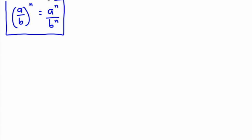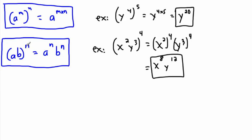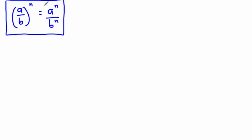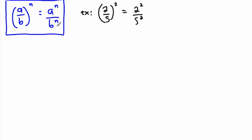So you're allowed to split them like this. When we were multiplying things we could write them out, we can do the same sort of thing with dividing as well. For example, 2 fifths to the power of 2 is the same thing as 2 to the power of 2 over 5 to the power of 2.